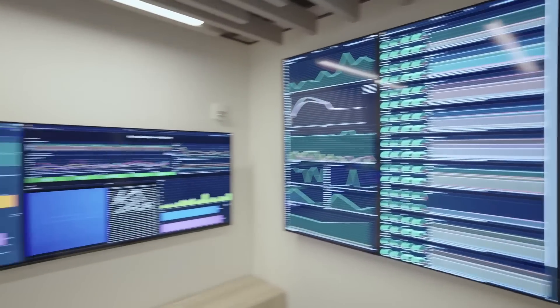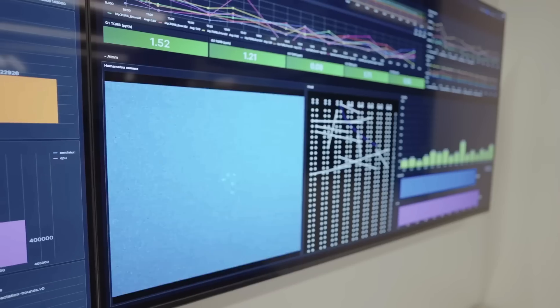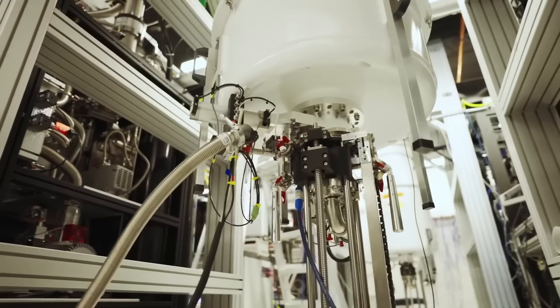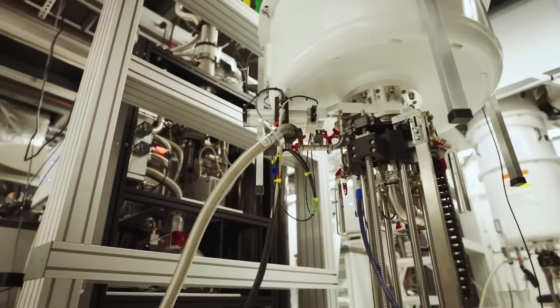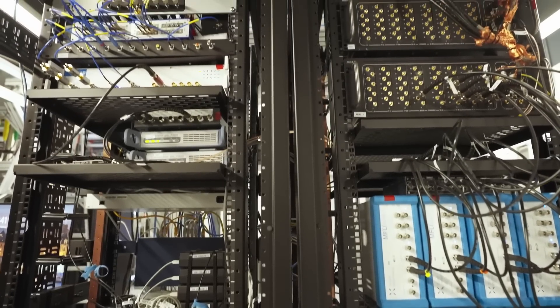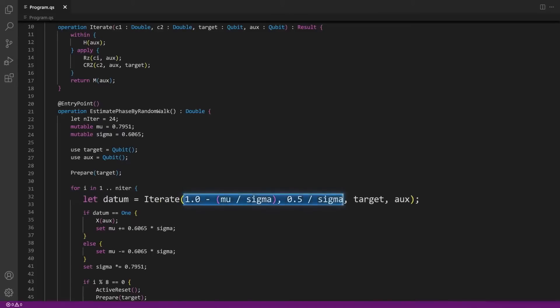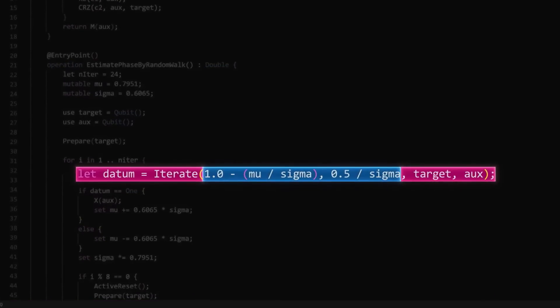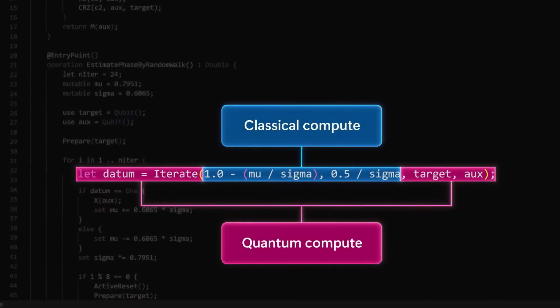Microsoft's quantum computing system is a hybrid model where quantum and classical computing work together. A quantum accelerator handles complex calculations, while a classical machine controls it and refines the results. This synergy enables ultra-precise simulations, especially in chemistry and materials science, allowing scientists to design new materials with perfect accuracy before ever entering a lab.